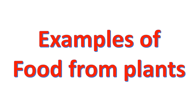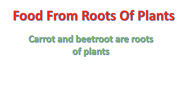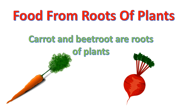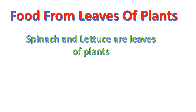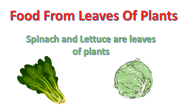Examples of food from plants. Food from roots of the plants: carrot and beetroot are roots of the plants and we eat them as our food. Food from leaves of the plants: spinach and lettuce are leaves of the plants and we eat these leaves as our food.